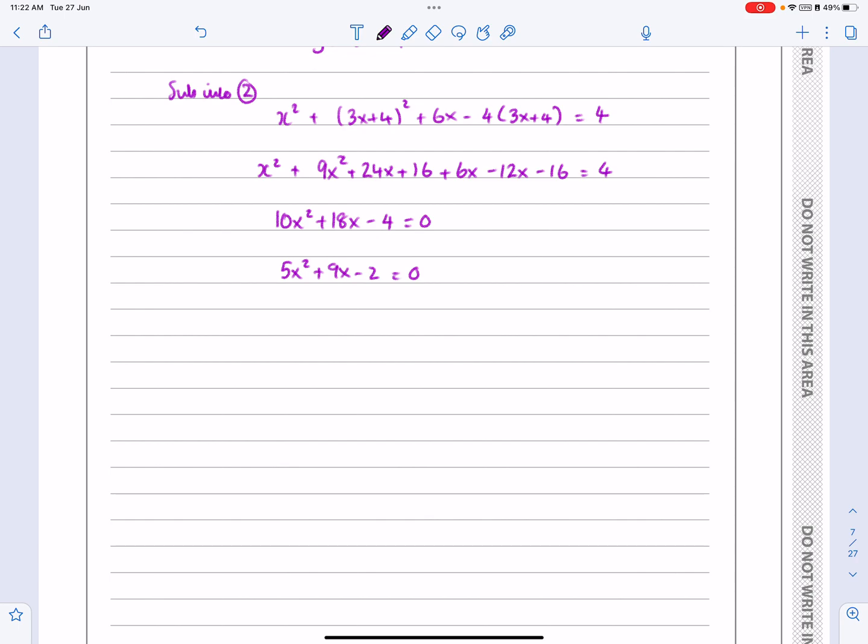You can either solve it by using the formula, which I wouldn't recommend. I'd always try the factorizing technique first because it's quicker. That factorizes to (5x - 1)(x + 2) = 0.